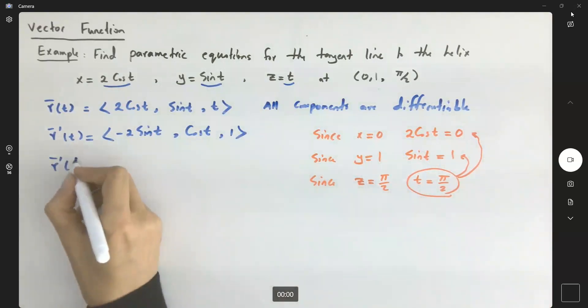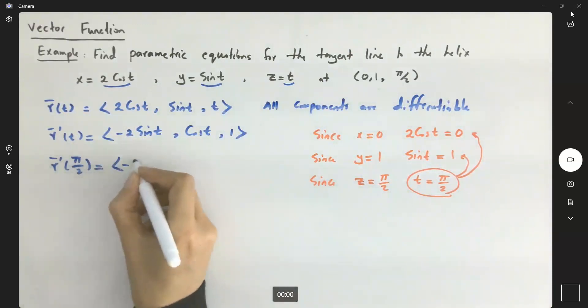r prime of π/2 is equal to negative 2 sine of π/2, comma, cosine of π/2,